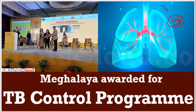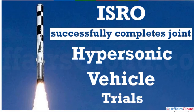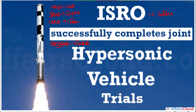ISRO is India's space organization. NASA is for the USA, JAXA for Japan, CNSA for China, and ROSCOSMOS for Russia. Coming back to ISRO — it recently successfully completed hypersonic vehicle trials.